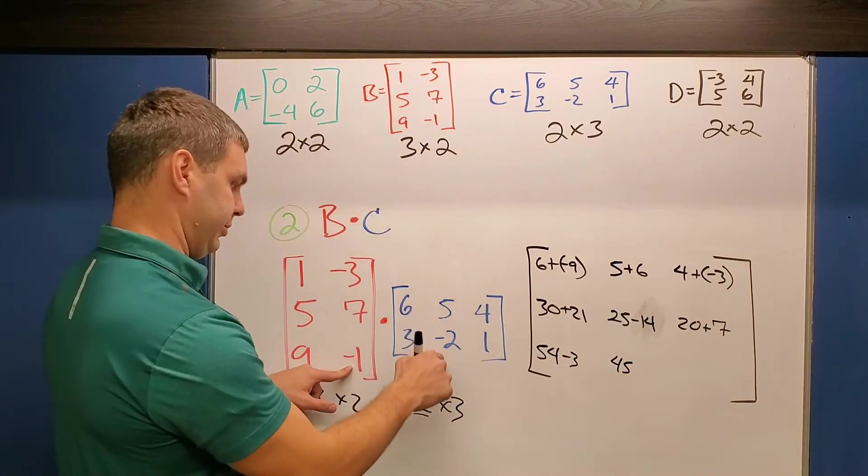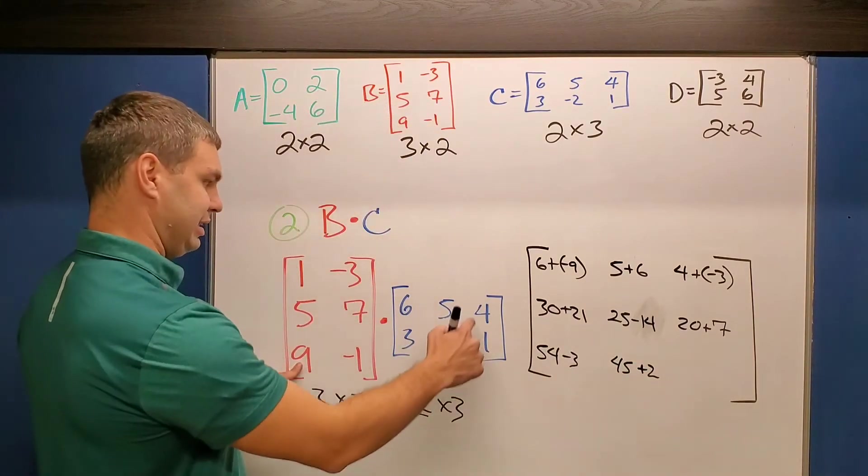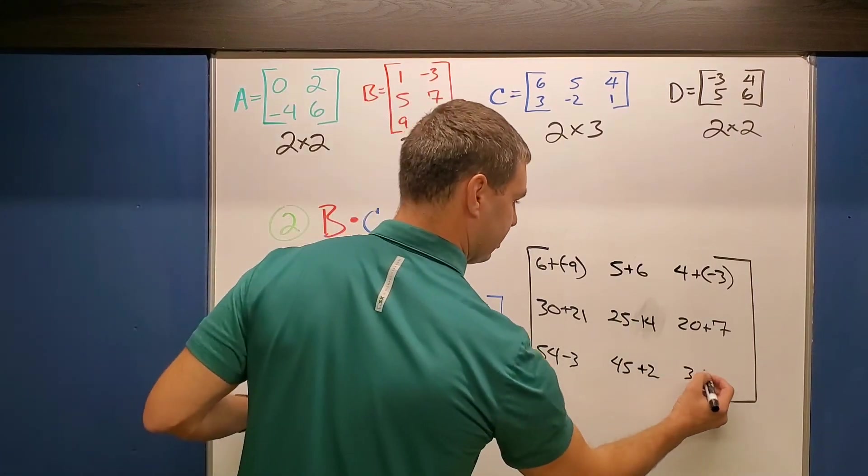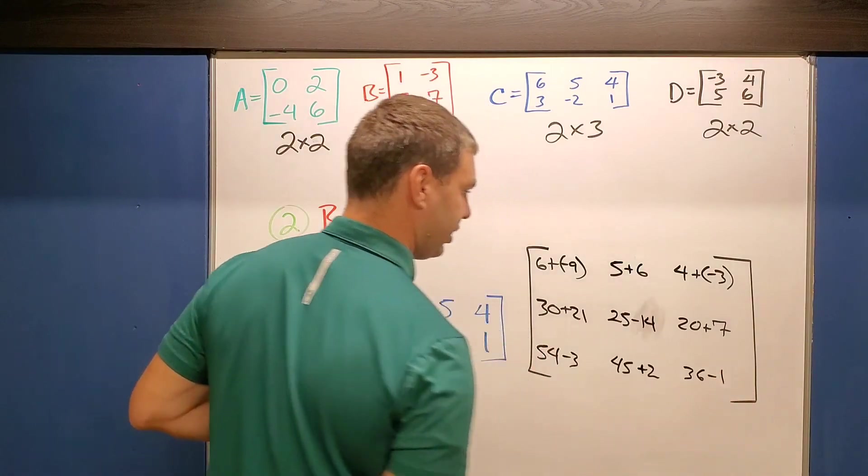And -1 times -2 is a positive 2. So plus 2. And then 9 times 4 is 36. And -1 times 1 is a -1.